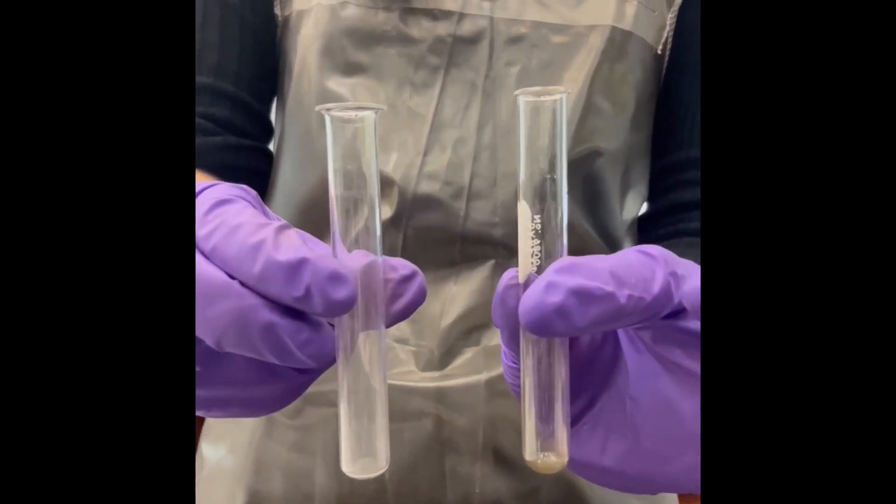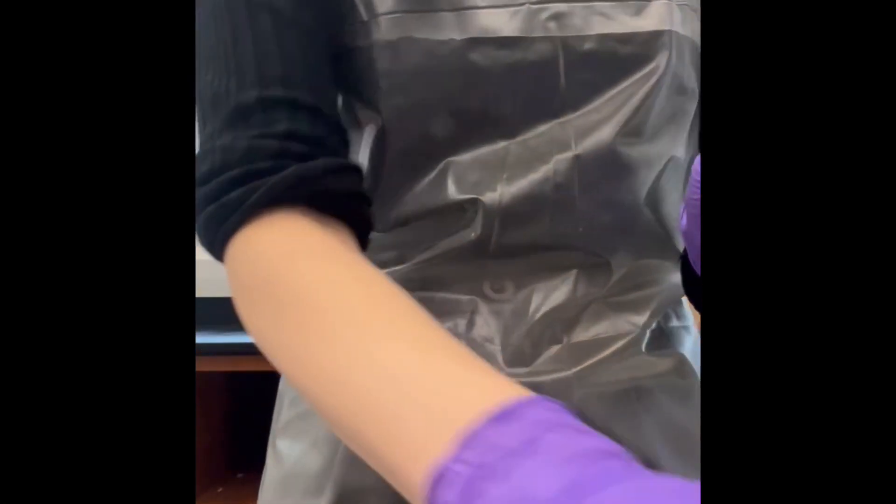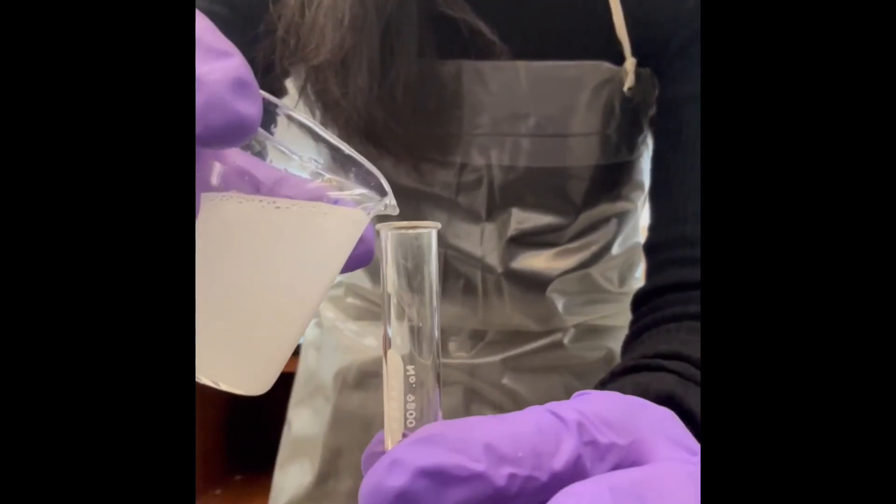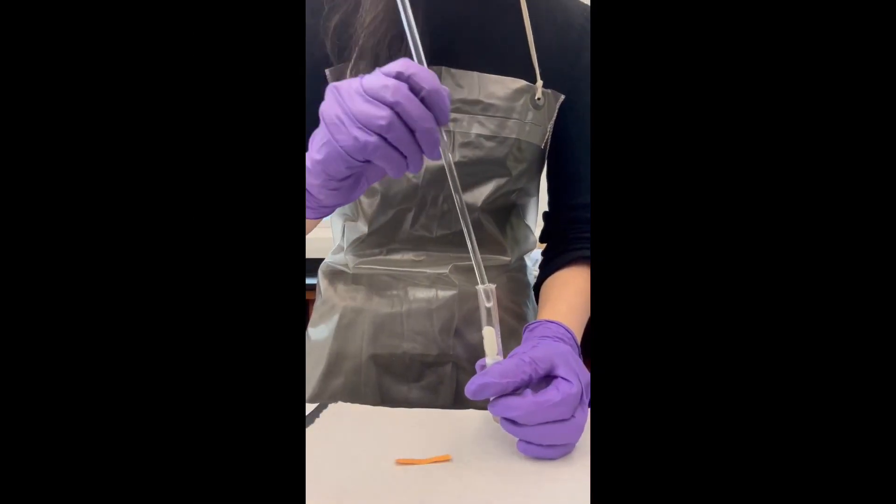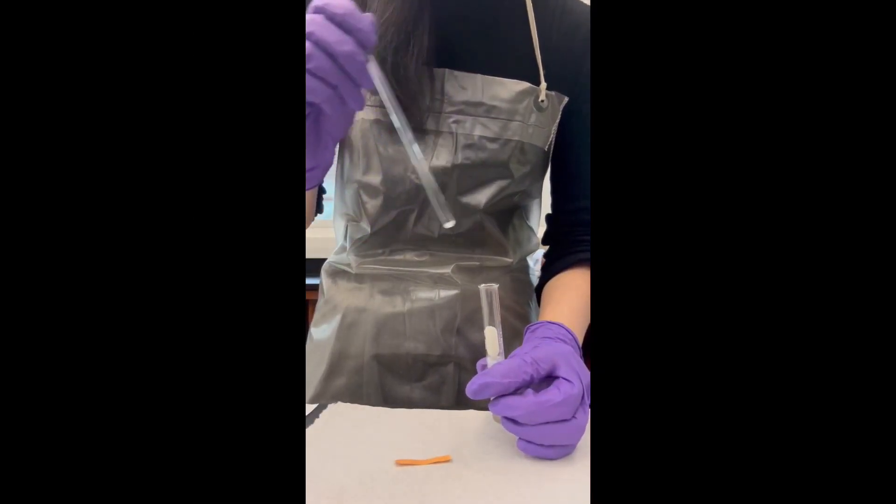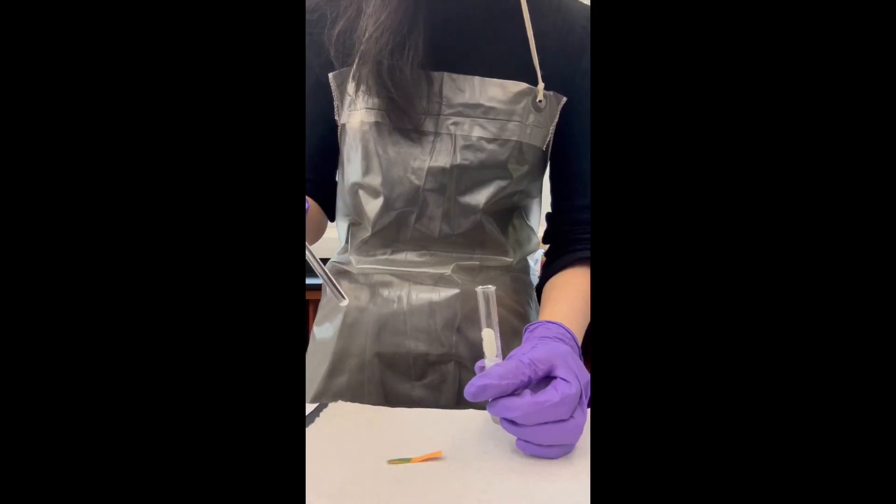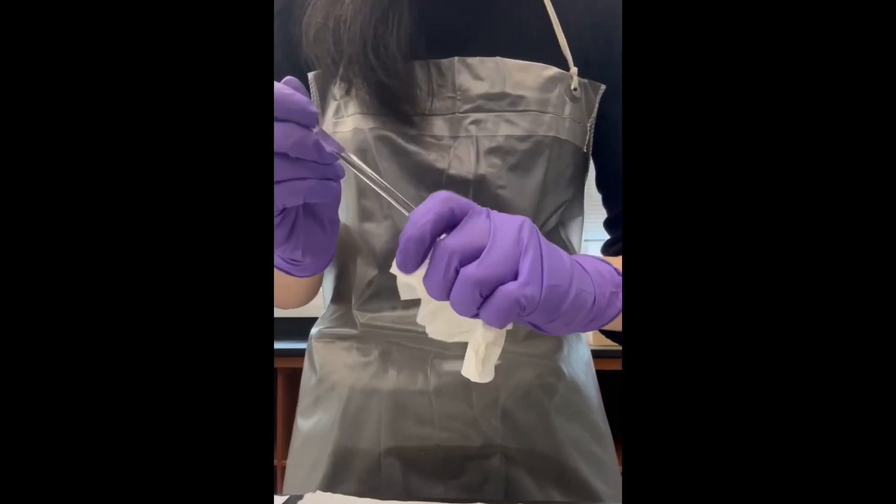For the pH test, collect two dry and clean small test tubes and pour about 5 milliliters of each solution into a test tube. Dip the stirring rod into each solution and touch the stirring rod onto a small piece of pH paper, not litmus paper, and record the pH of the solution. Make sure to rinse and dry the stirring rod between each tube.